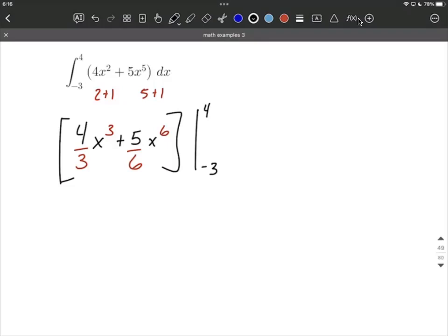From here, what we need to do is first plug in the upper bound of integration in for each of our x's, so that's going to look like 4 thirds. And we plug in the 4, the upper bound, cubed, plus 5 sixths, plug in the upper bound, raise to the 6th power.